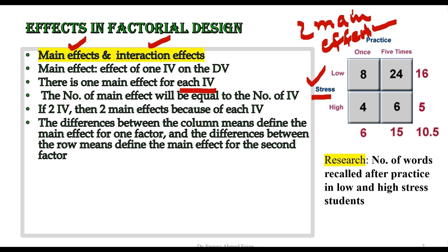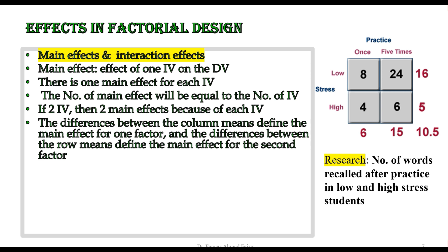Let us look at this figure to understand how to calculate the main effect. Practice is one independent variable. We look at the two column mean values: 6 is the mean for one level and 15 is the mean for the second level. If we subtract 15 from 6, we find the effect due to practice.